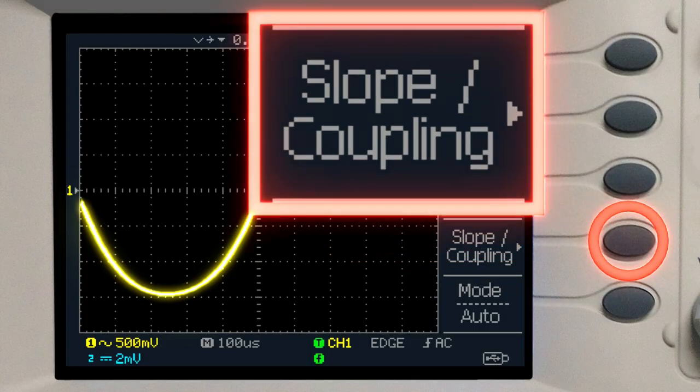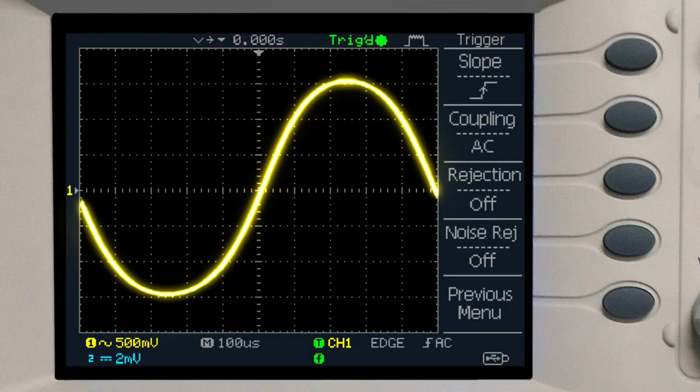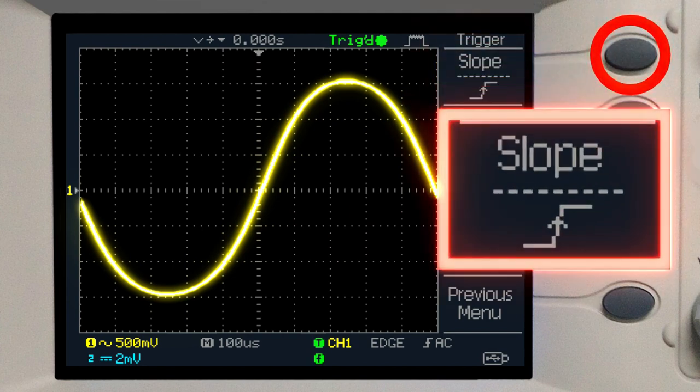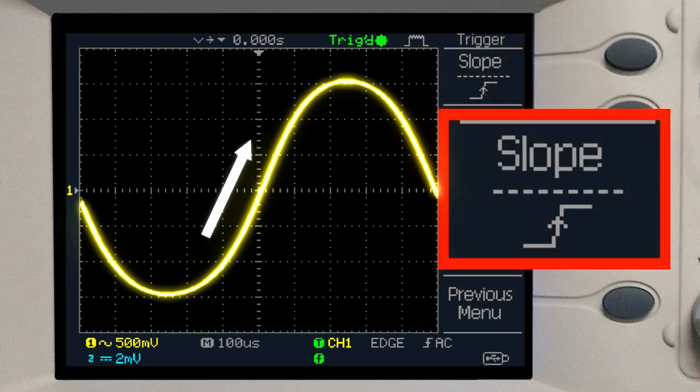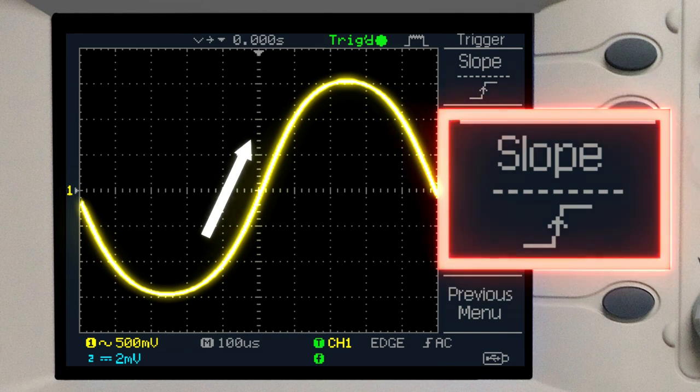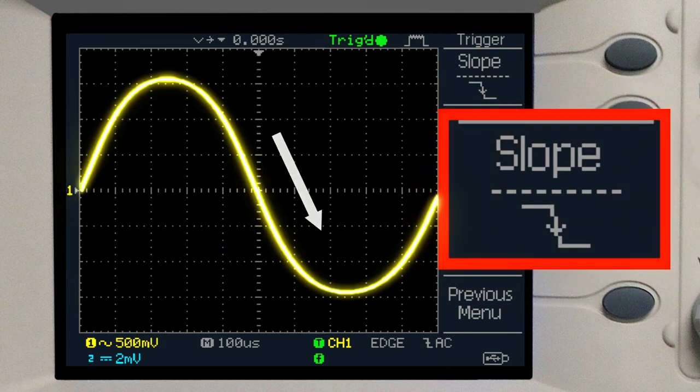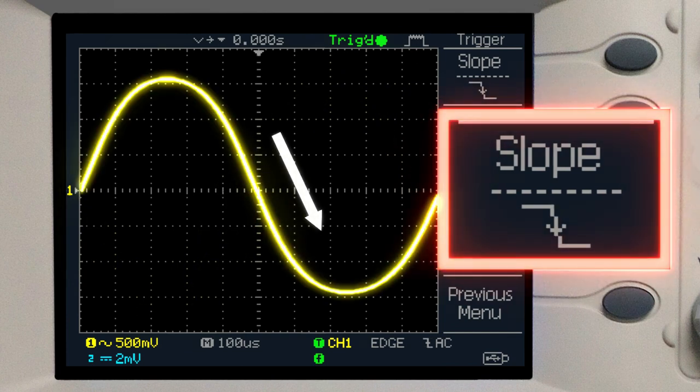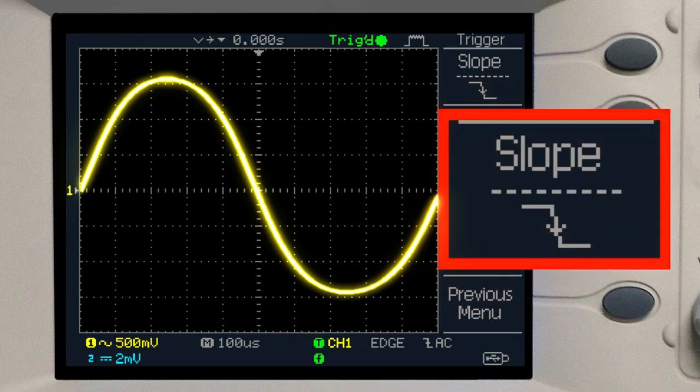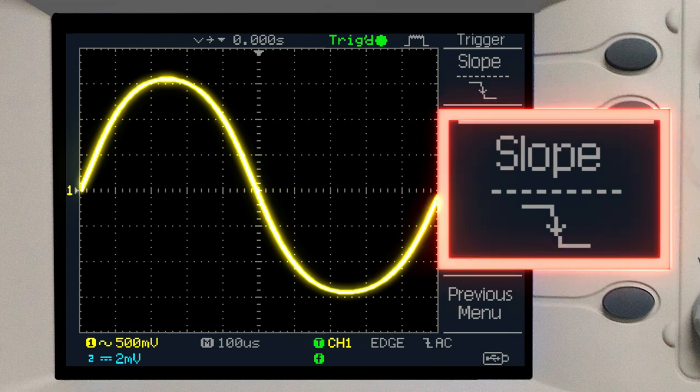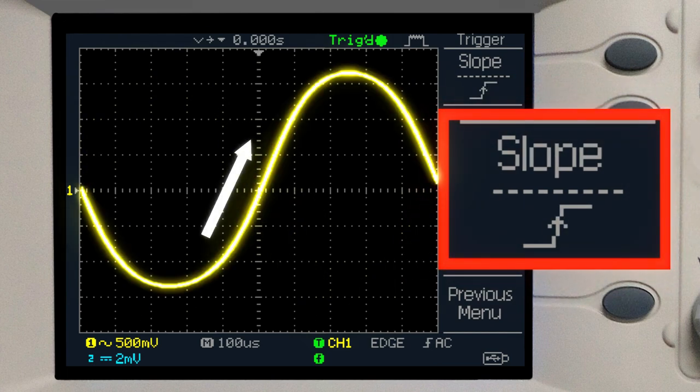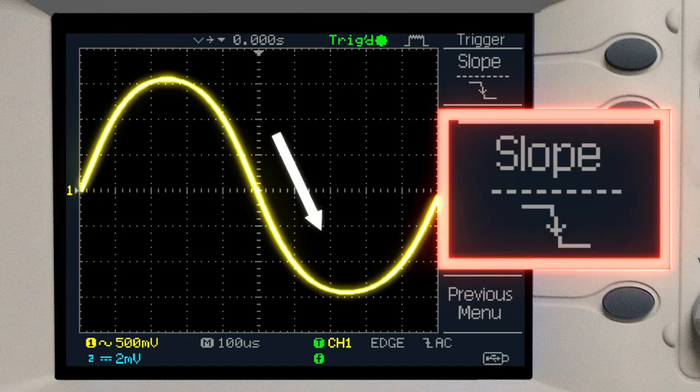Press the slope and coupling button to switch to the detailed settings screen. Pressing the slope button toggles whether the trigger should be based on crossing the threshold from bottom to top or from top to bottom. Notice the change in the waveform. Bottom to top. Top to bottom. This is the basic usage of the oscillator and oscilloscope.